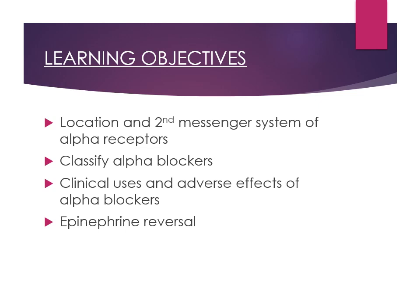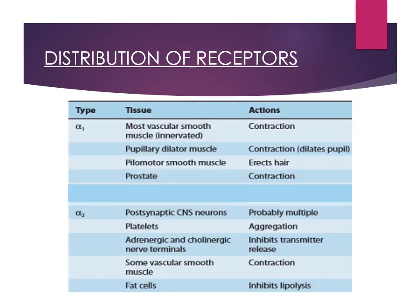Let's first look at the location of alpha receptors. Alpha receptors are basically of two types: alpha 1 and alpha 2. When you think of alpha 1, remember blood vessels — arterioles and veins — both have alpha 1 receptors. The most important location of alpha 1 is the vascular smooth muscles, arterioles and veins. The second is the base of the bladder and prostate smooth muscles. Then, the dilator pupillary muscles — the radial muscles of the iris — and the pyelomotor smooth muscles.